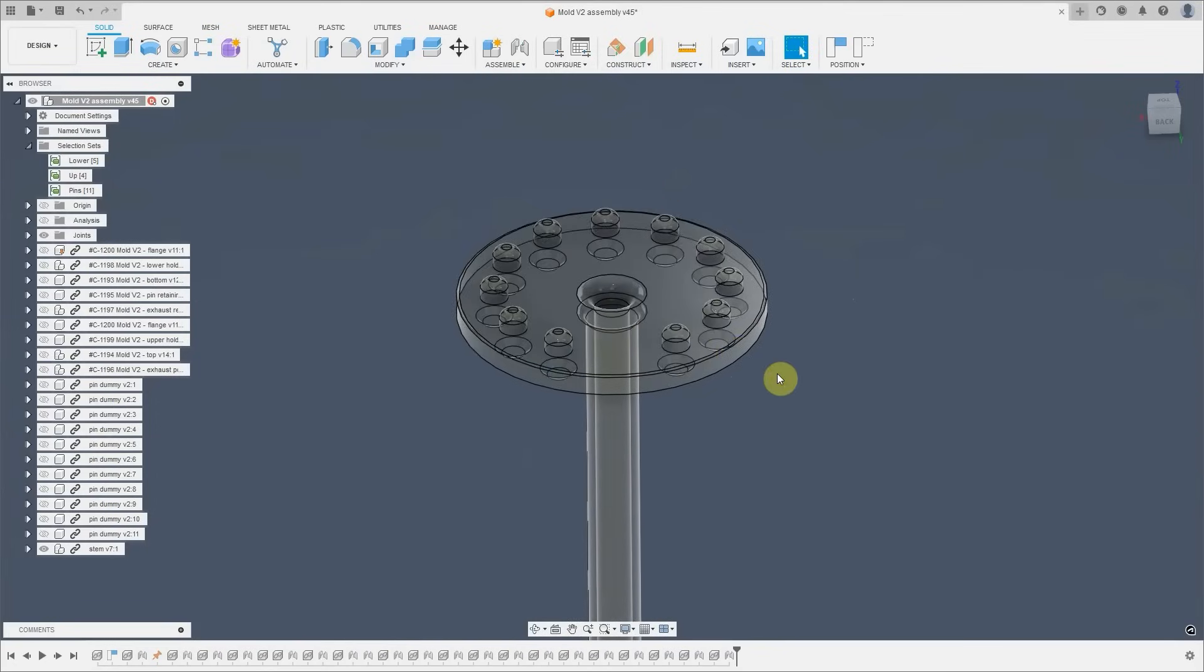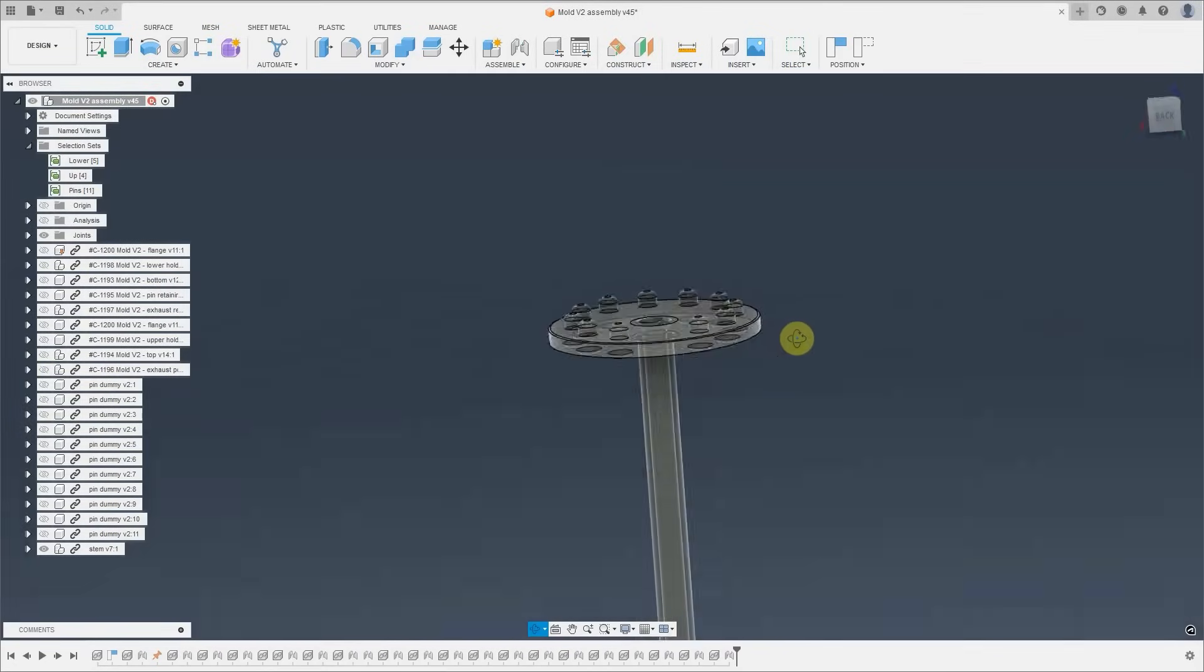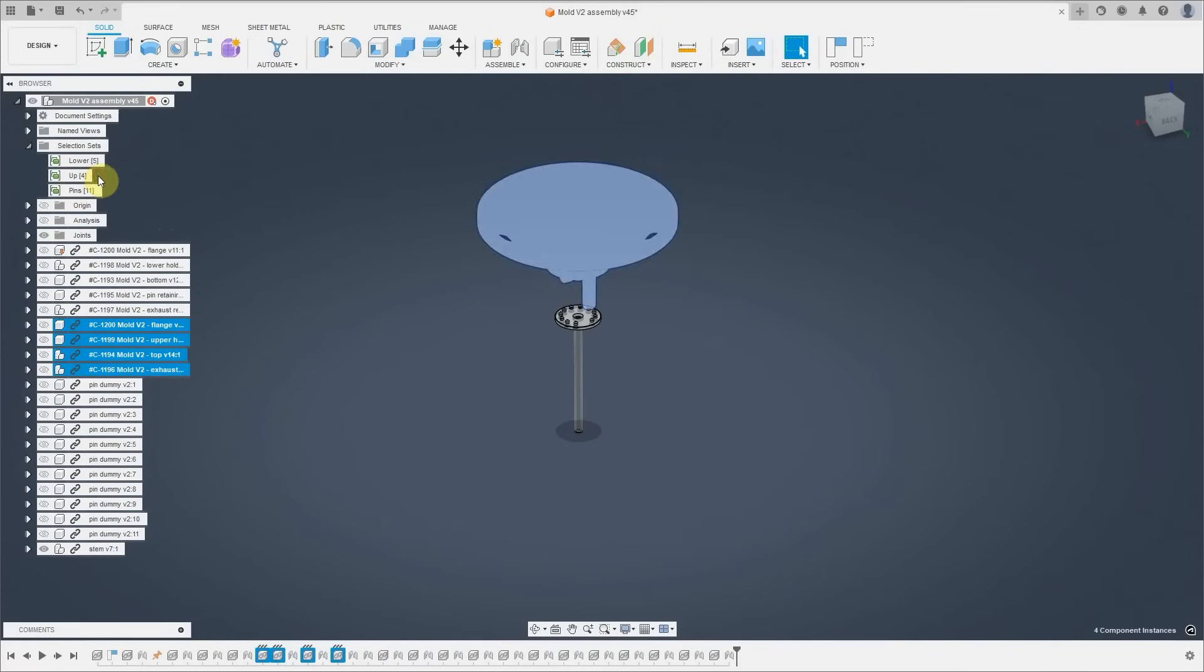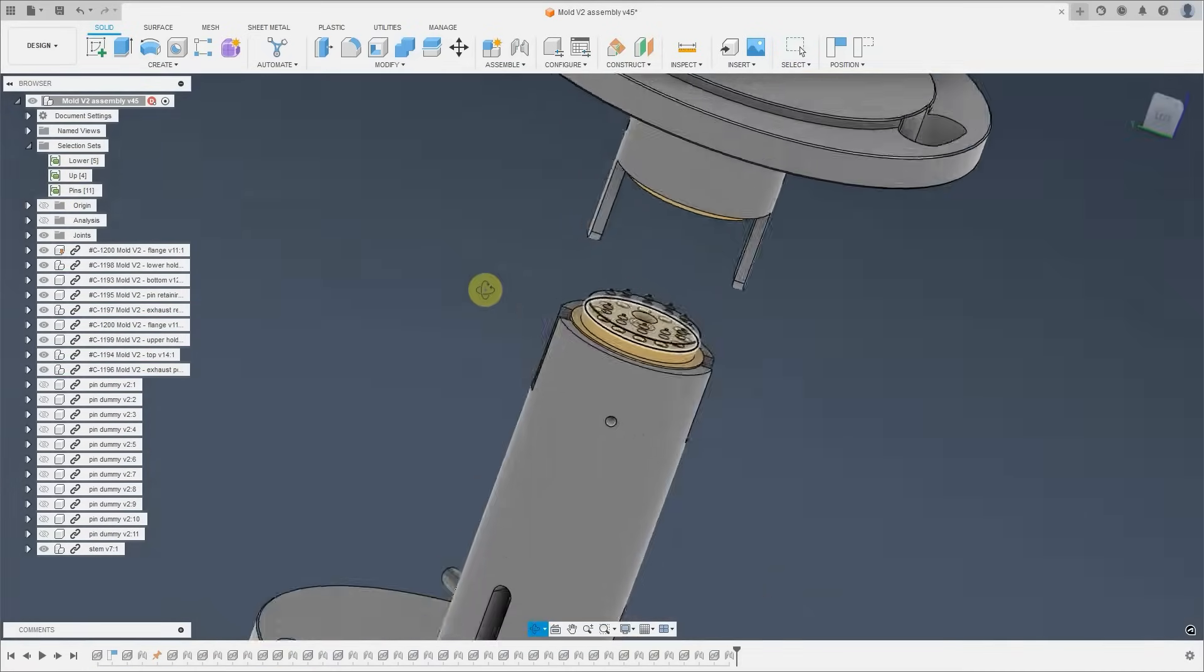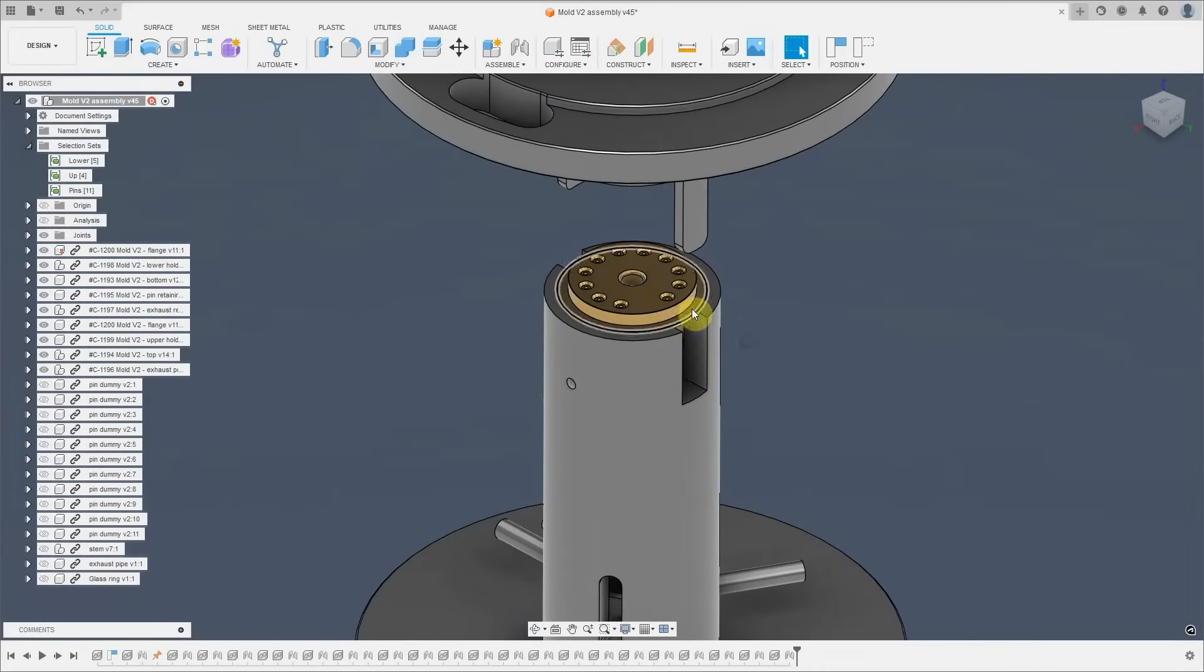So this is the stem that we want to produce by the mold. The mold will consist of an upper part and a lower part, and it will work like this.